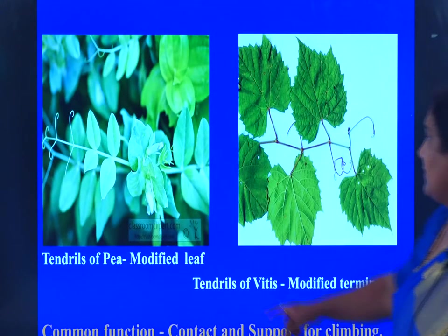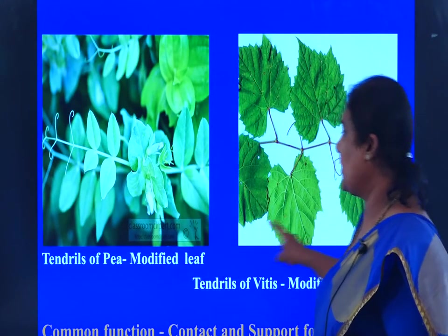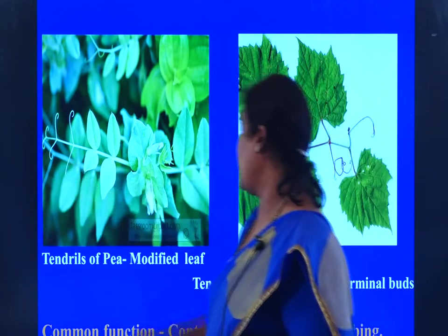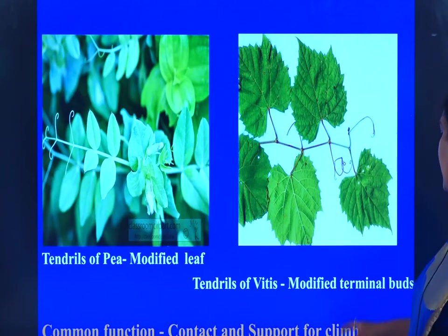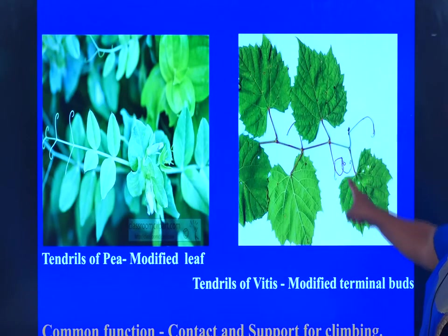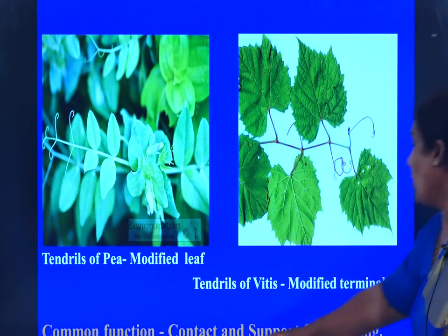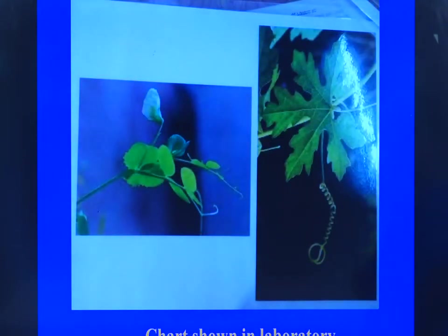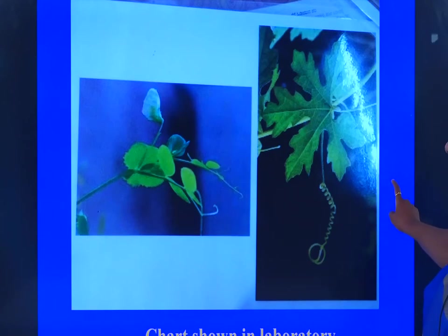See here, this is the picture captured. Are you able to see here? Tendrils of pea — modified leaf. Here, the terminal buds have been modified into tendrils. But both of them have a common function: contact and support for climbing. This is the chart we show in the laboratory for you while explaining, and it has also been put onto the screen here.